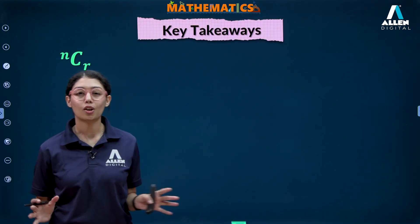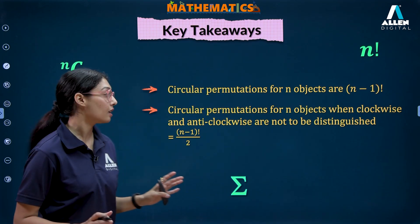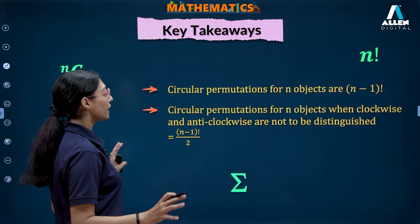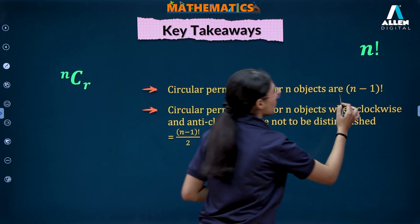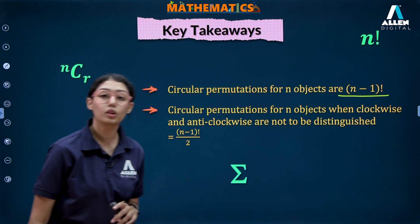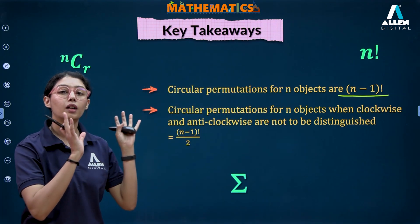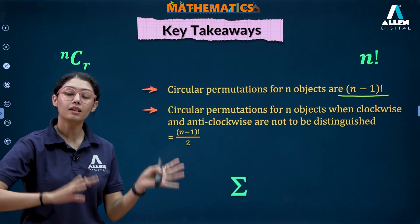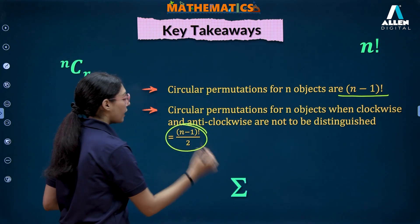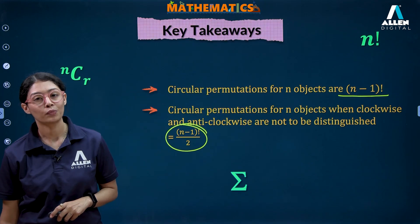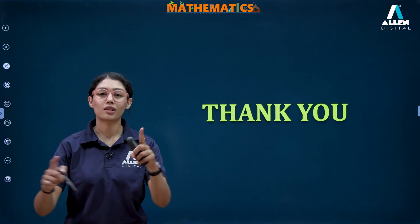To summarize the key takeaways: circular permutations for n objects are given by n minus one factorial ways. If we do not distinguish between clockwise and anti-clockwise arrangements, it is n minus one factorial divided by two. Thank you everyone for joining — stay tuned.